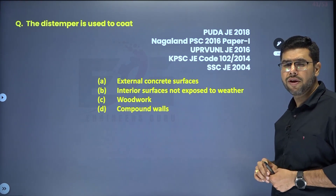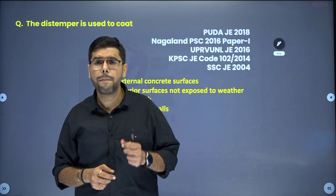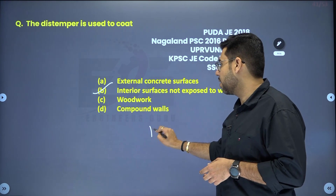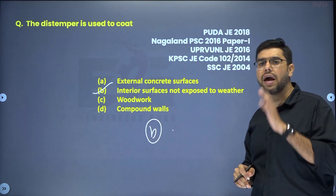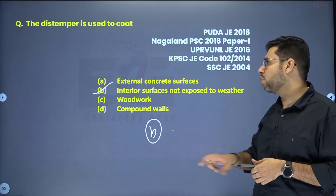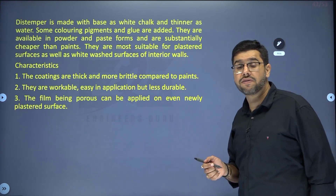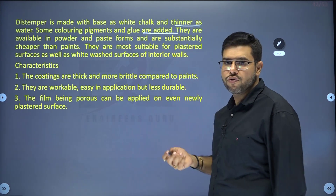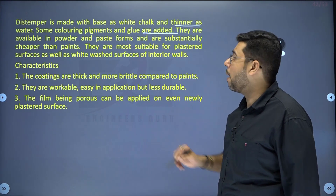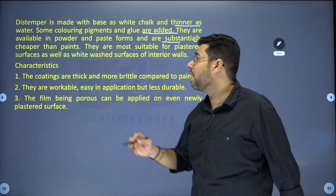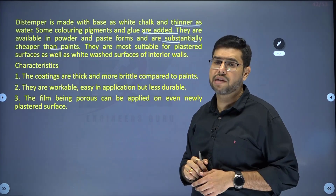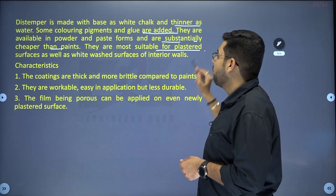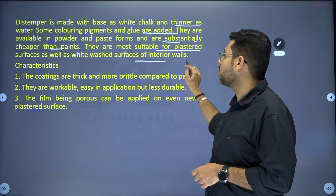Distemper — it is a cheaper quality of paint with very low durability. It is cheaper than paint and used on interior surfaces not exposed to weather. Never use distemper on exterior surfaces, as it will wash away with water. Distemper is made with a base of white chalk and water as thinner — so it is very cheap. Some coloring pigments and glue are also added to give color. They are available in powder and paste forms and are substantially cheaper than paint. Most suitable for plastered and whitewash surfaces of interior walls.